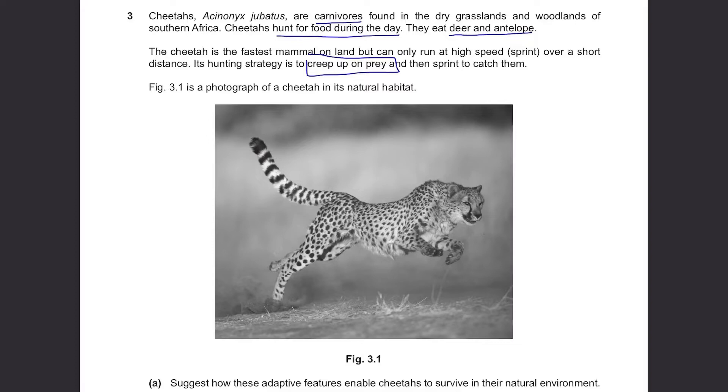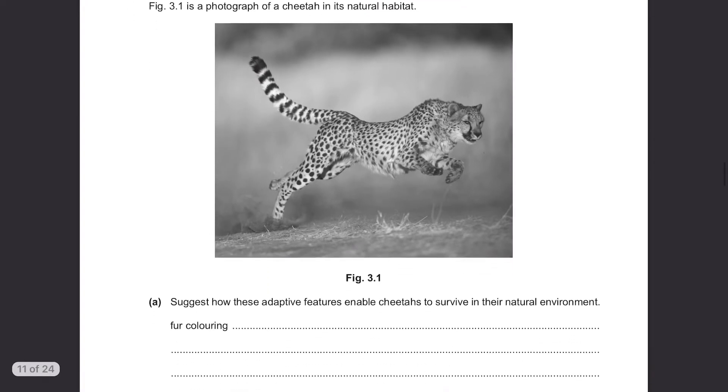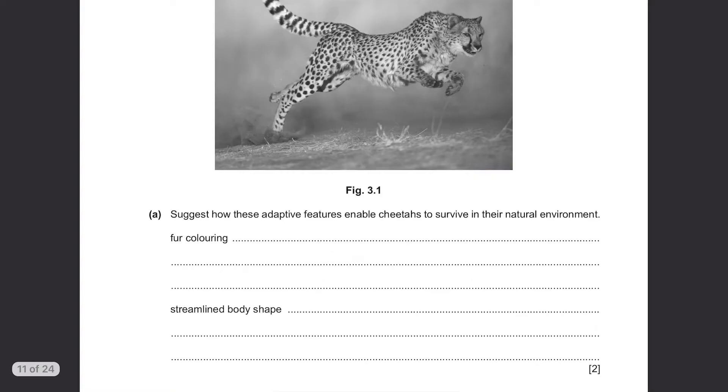Figure 3.1 is a photograph of a cheetah in its natural habitat. Part A suggests how these adaptive features enable cheetahs to survive in their natural environment. Fur colouring. We can see dark spots on its fur. It helps to be camouflaged so that they are not easily seen by prey when creeping up on them.